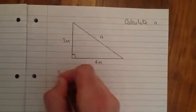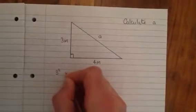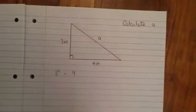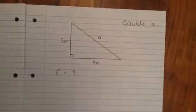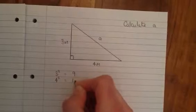So I'm going to start off by doing 3 squared, which is the same as 3 times 3, which gives me 9. I'm then going to do 4 squared, which is basically 4 times 4, and that gives me 16.